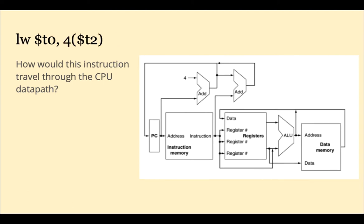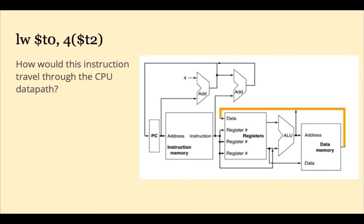Now let's say the next instruction is a load word. First the instruction is decoded, broken up into the opcode, the register fields, and the immediate field. The T2 register is read from the register file into the ALU, as is the 4 from the lower 16 bits of the instruction. The ALU adds 4 plus the contents of T2 to calculate the address. The contents of that address are read from the data memory, then written back into the register file into register T0. Meanwhile, the PC has been updated by 4 to point to the next instruction.